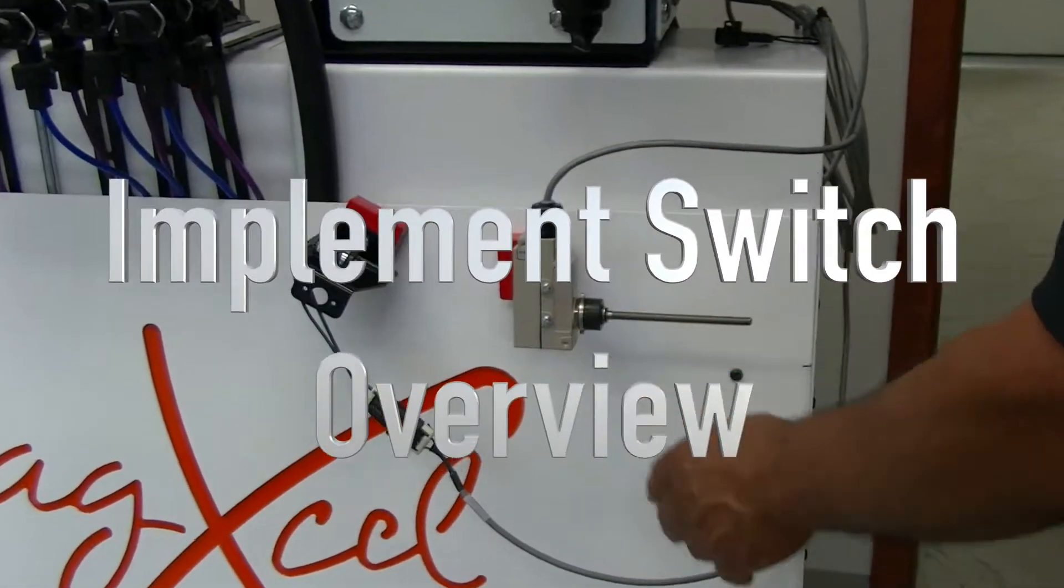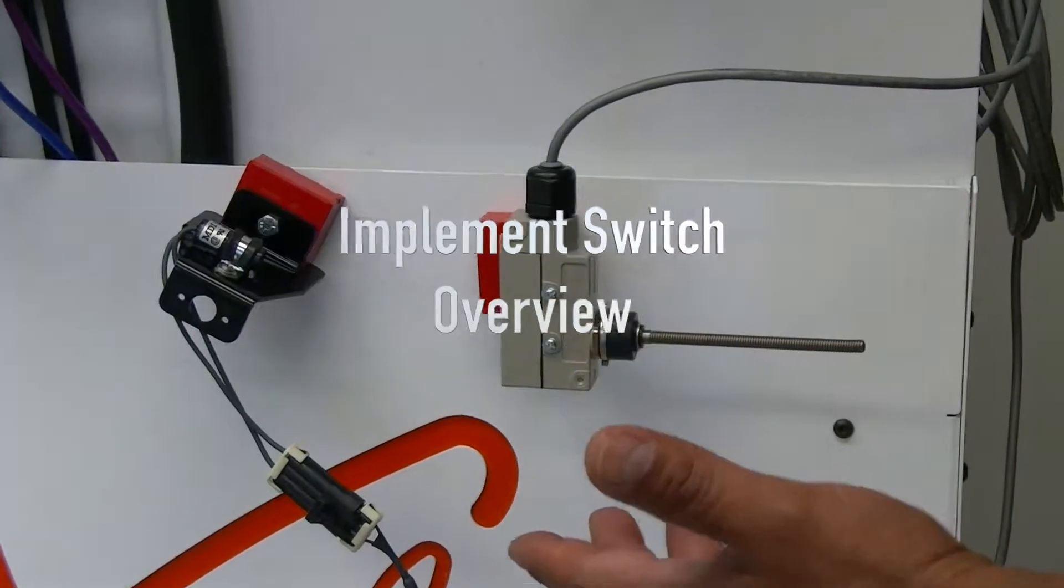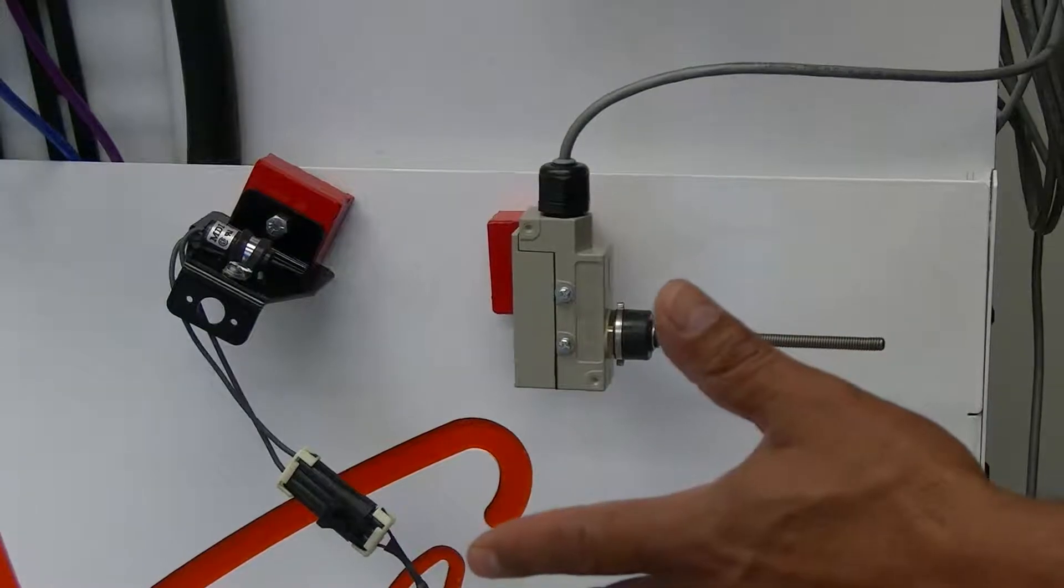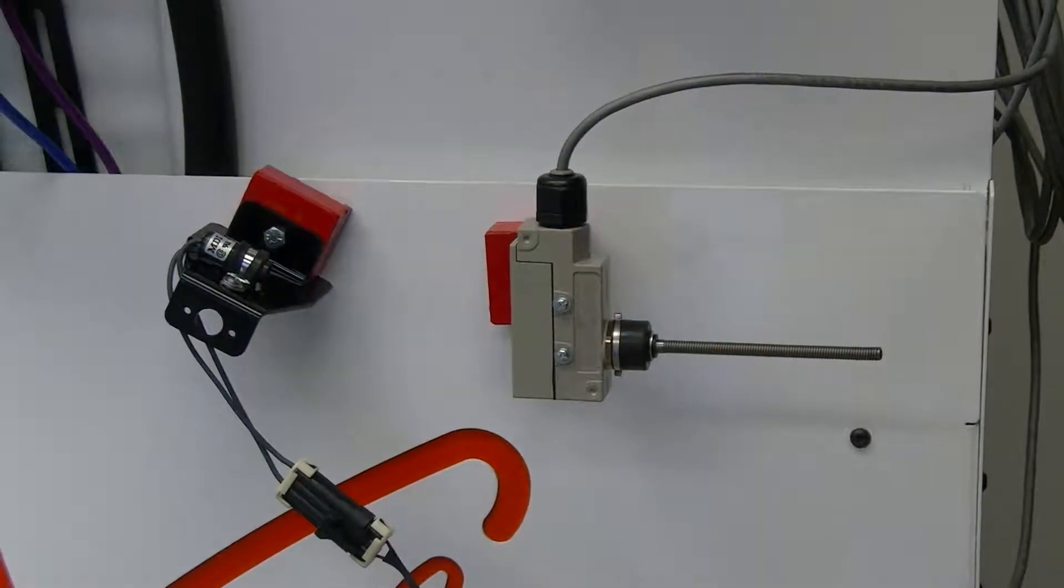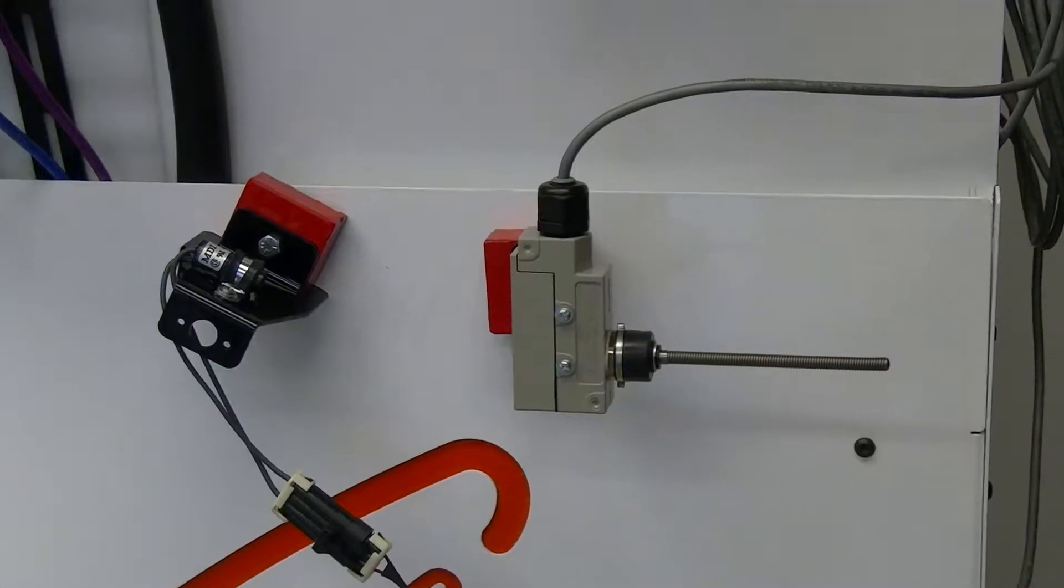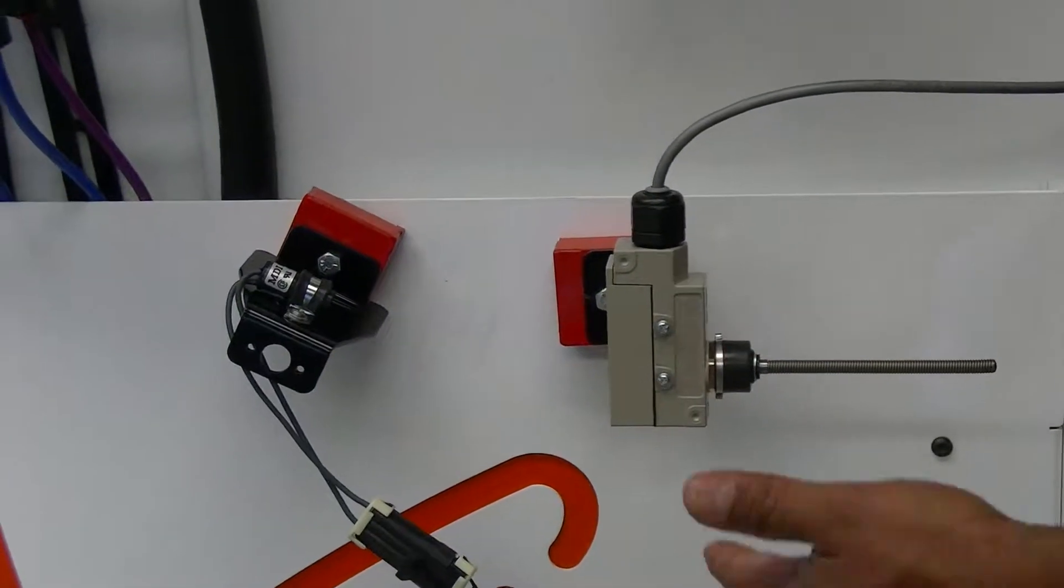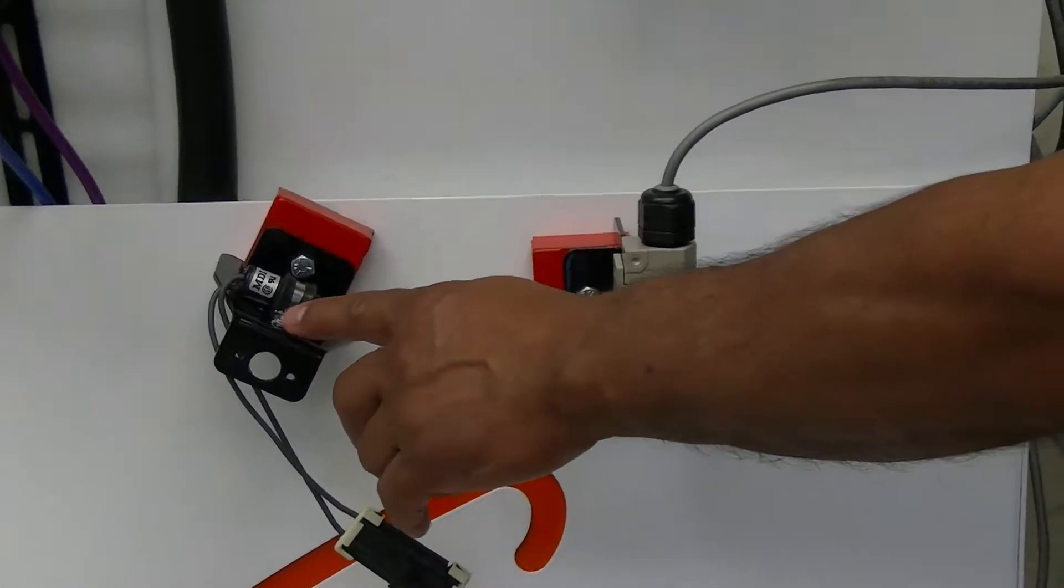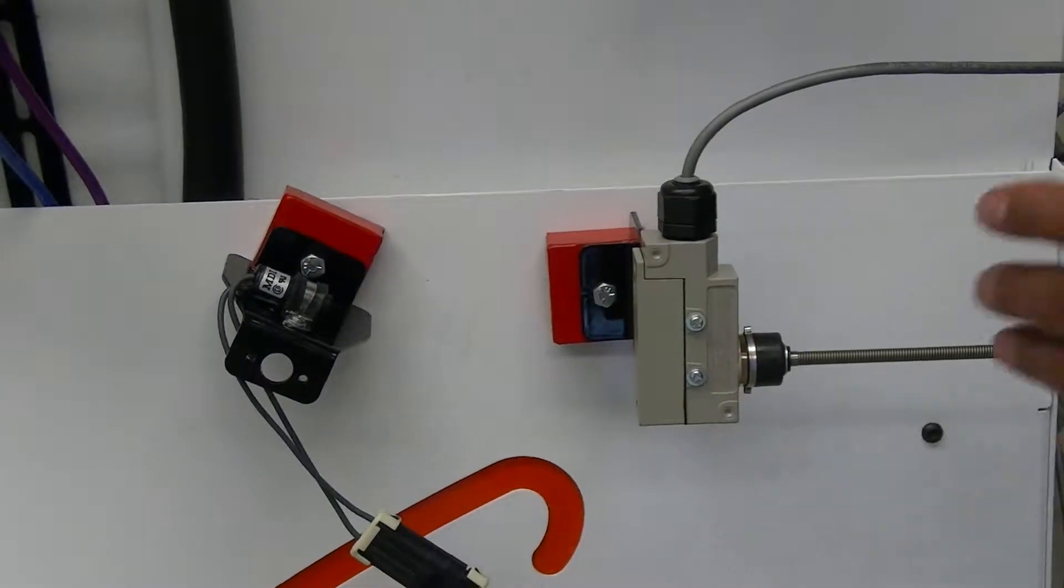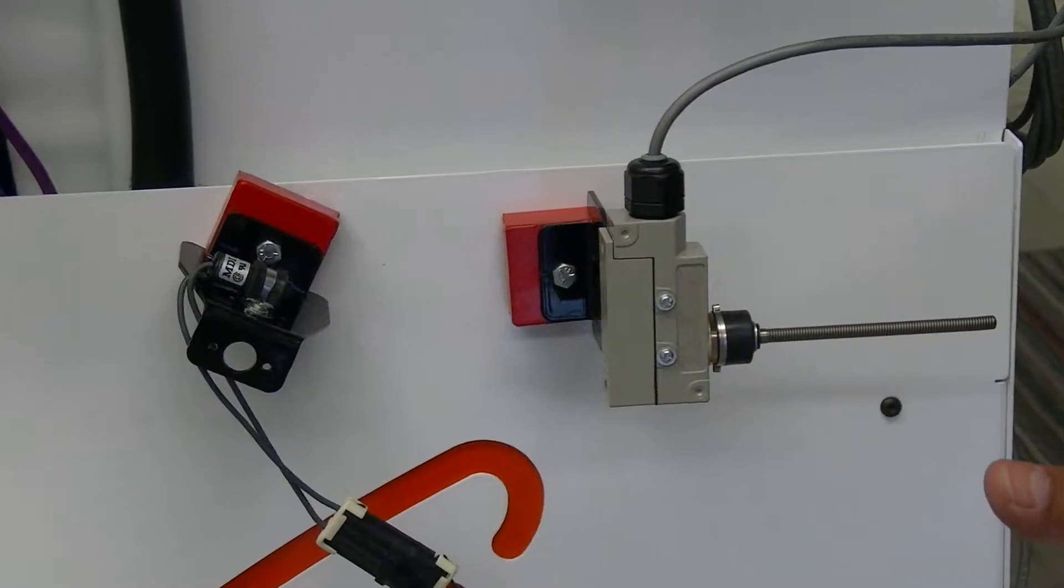Okay, these are the two different implement switches that we use. They're used to basically put the system in a hold status, and this typically takes place when we either raise or lower the implement. This is our whisker switch, and this here is a mercury switch.